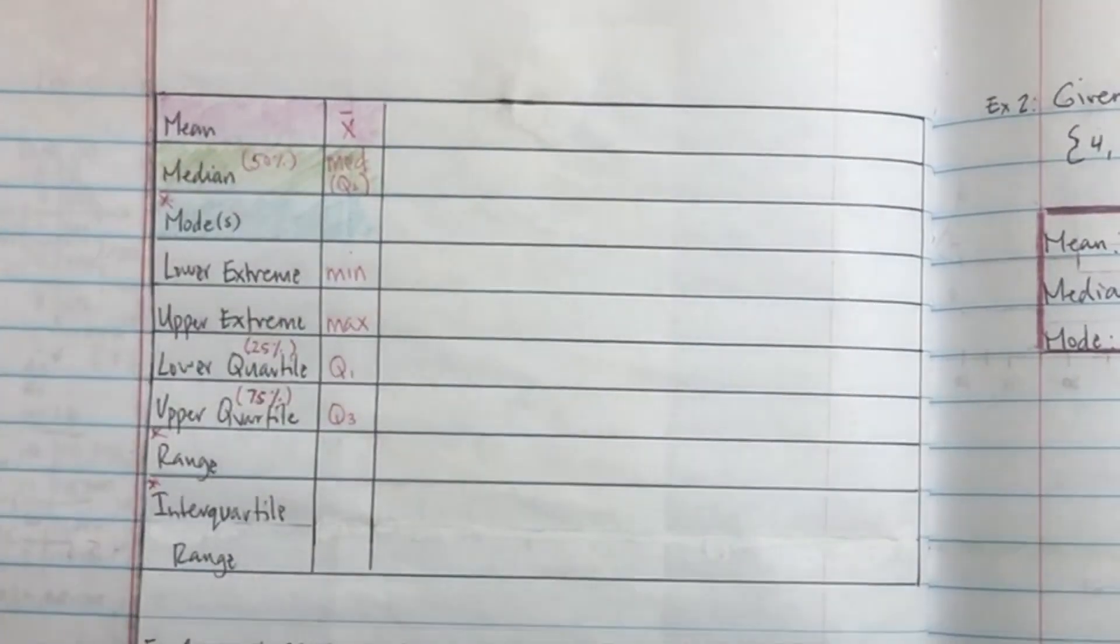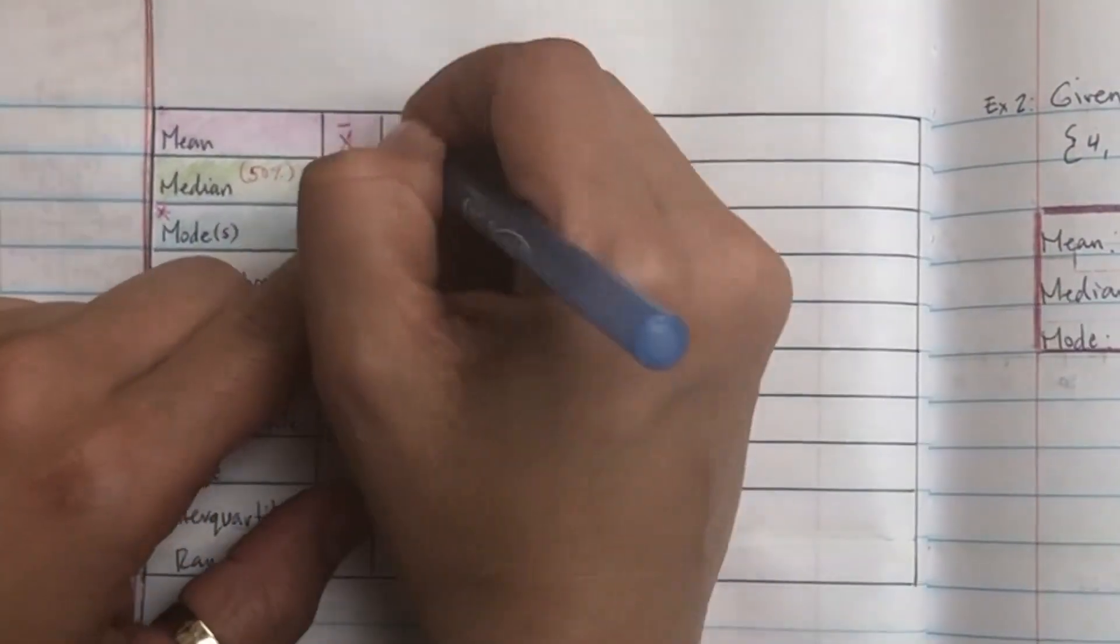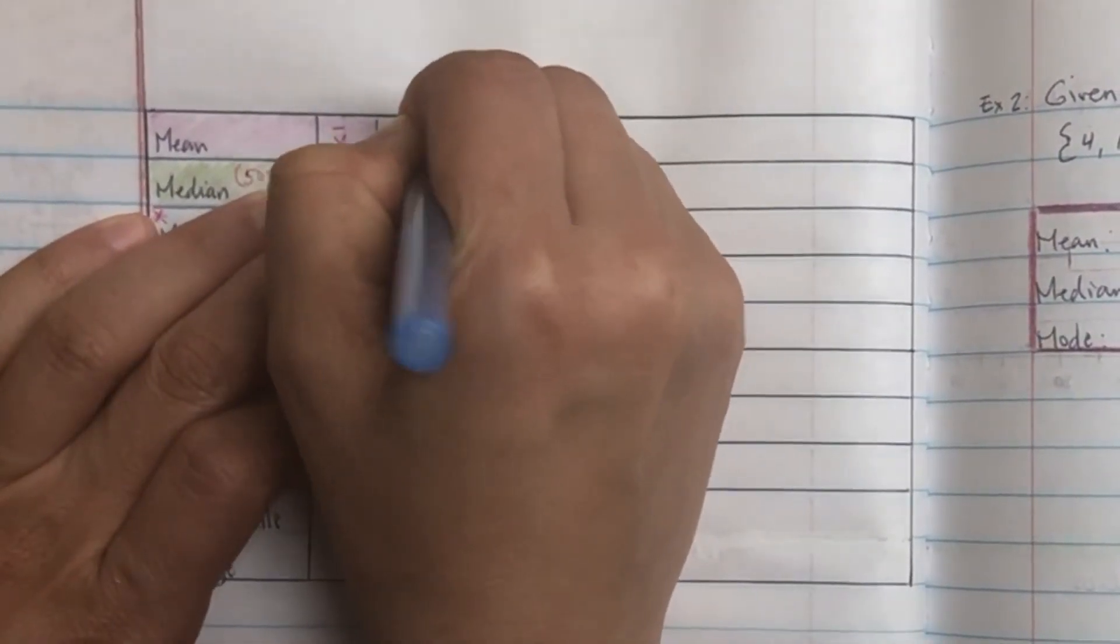Central tendency, central tendency. The mean is the average of the lot, the median is the one in the middle spot, the mode is the one you see a lot.